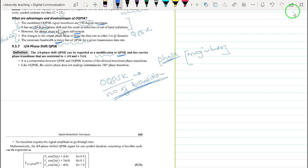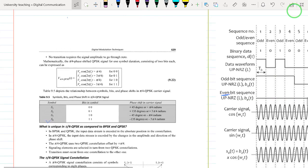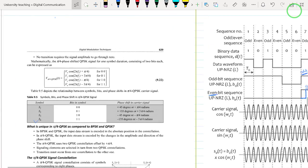To mitigate these disadvantages, we come up with a modified version of QPSK that we refer to as the π/4 phase shifted QPSK. It's a compromise between QPSK and OQPSK in terms of the allowed phase transitions. Like in OQPSK, the carrier phase does not undergo 180 degrees.